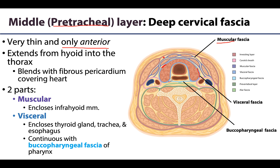Sometimes the buccopharyngeal fascia is considered part of the visceral layer, but either way they are continuous. You can see the buccopharyngeal fascia in light blue, posterior to the pharynx or esophagus. It also surrounds the muscles of the cheek, in particular the buccinator. The pharyngeal part of its name comes from lining the pharynx, and the bucco part comes from surrounding some of the muscles of the cheek.